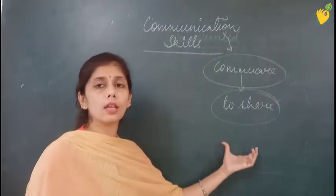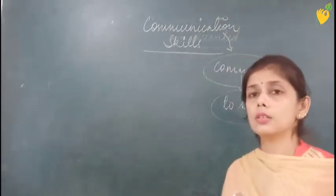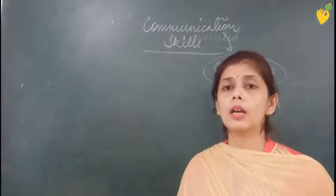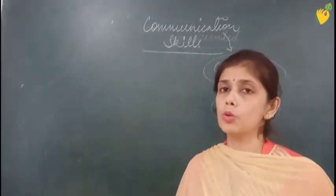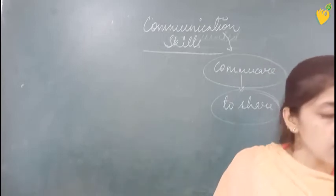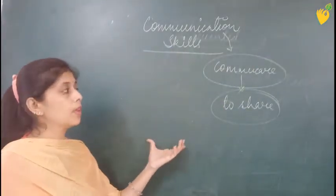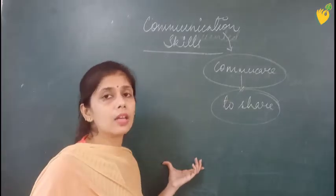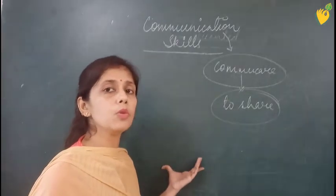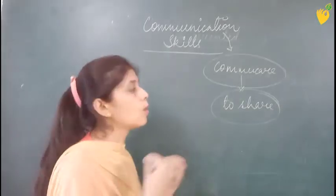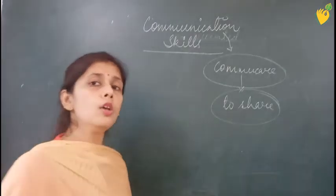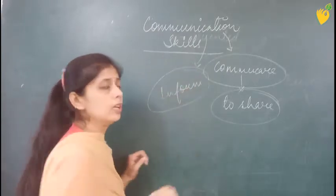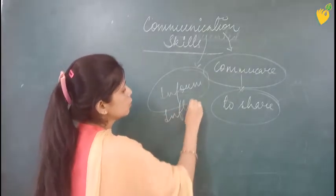Why is communication necessary? Communication is necessary just to influence others. It is required to inform — if you want to tell something to the other person or party, then you have to communicate with that person. That communication can be verbal, non-verbal, or visual. But you have to communicate; you have to share. The first importance of communication is to inform, and the second is to influence.